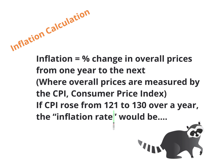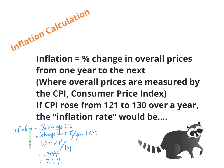For example, if the CPI rose from 121 to 130, inflation is the percent change in the CPI from one year to the next. You take the change over the first year's CPI — subtract 121 from 130, divide by 121, and you get 0.0744, or 7.4% inflation.